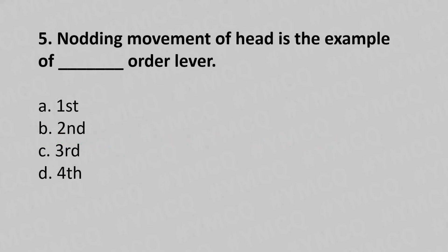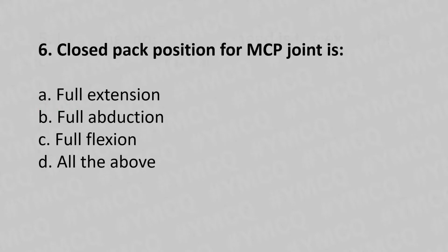Fifth question: nodding movement of the head is an example of which order lever? Option A: first order lever, option B: second order lever, option C: third order lever, option D: fourth order lever. The answer is option A: first order lever.